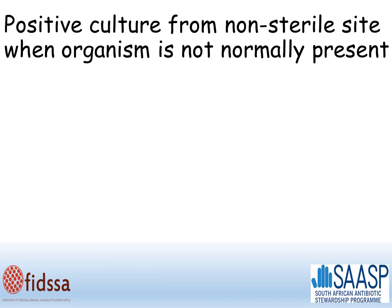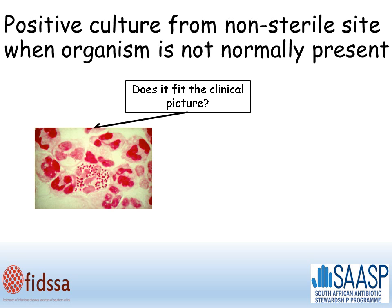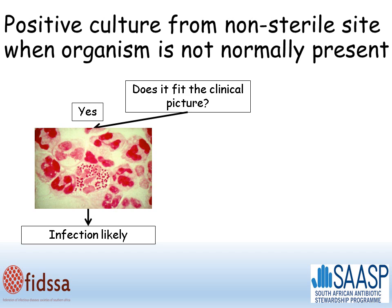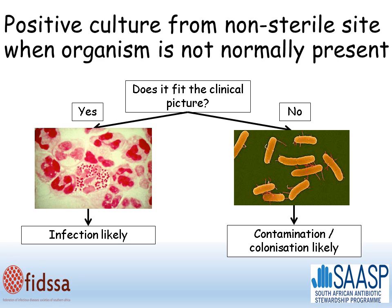A slightly different approach is needed when interpreting a positive culture from a non-sterile site when the organism is not normally present. The approach is similar to that of a positive culture from a sterile site — you need to decide if the result fits the clinical picture. For example, gram-negative diplococci from a urethral swab representing Neisseria gonorrhoeae fits the clinical picture and infection is likely. Conversely, a salmonella grown from stool in a patient with no features of bowel infection does not fit the clinical picture and likely represents contamination or colonization.